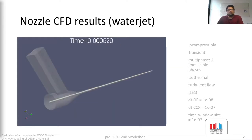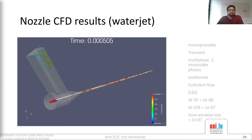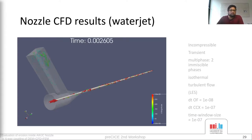Here we see the water jet entering the nozzle — it's the same simulation but in a 3D perspective. It is more interesting to see the aeroglyph velocity vectors showing the velocity inside the hopper. As the water jet enters the focusing tube, it creates negative pressure and we can see that flow is established from the top of the hopper.